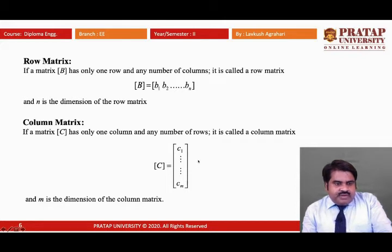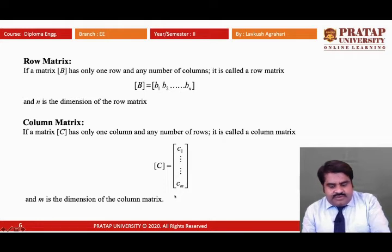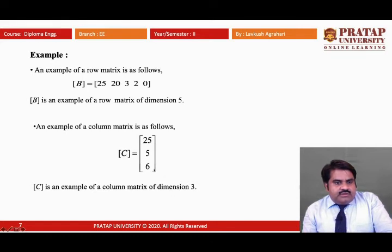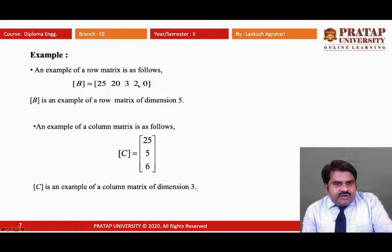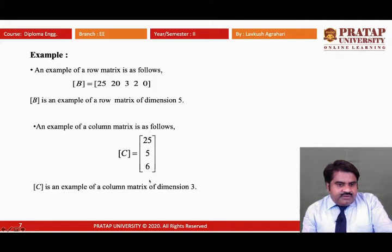Column matrix: if a matrix has only one column and any number of rows, it is called a column matrix. For example, matrix C has elements C1, C2, up to Cm — one column and M rows. Looking at concrete examples: matrix B has one row and five columns, so it is a row matrix of dimension 5. Matrix C has one column and three rows, so it is a column matrix of dimension 3.